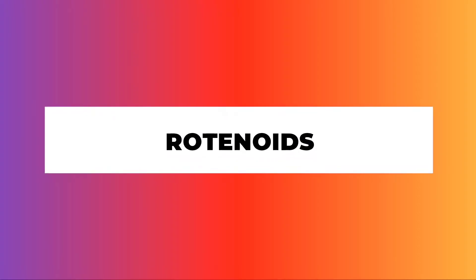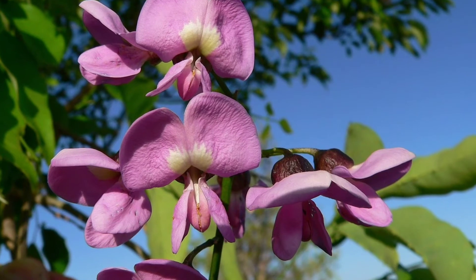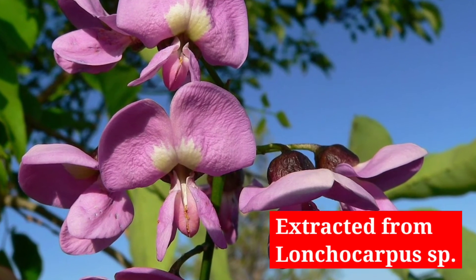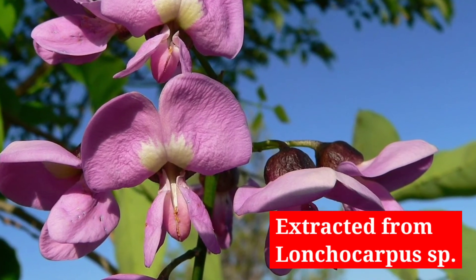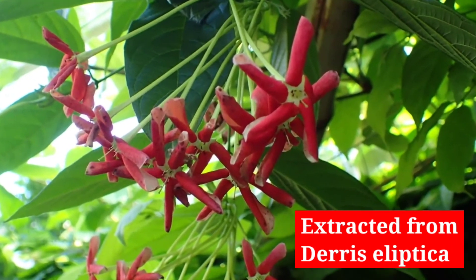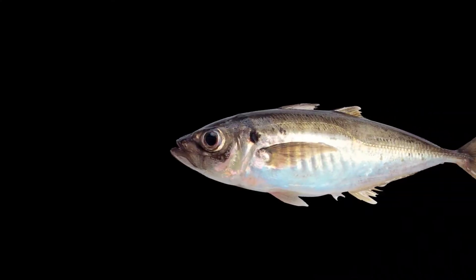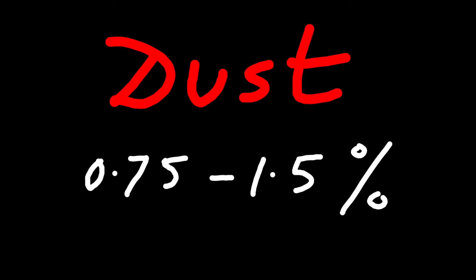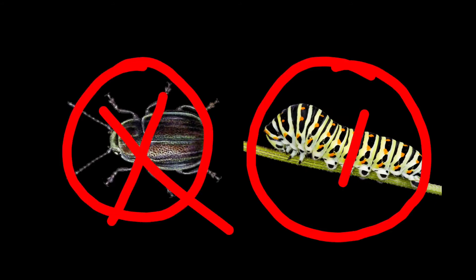First, let's talk about Rotenoids. Rotenoids are actually extracted from the root of the leguminous plants Lonchocarpus species and Derris elliptica. It's a well-known contact fish poison. Nowadays it is used as dust having 0.75 to 1.5% rotenone, effective against beetles and caterpillars.